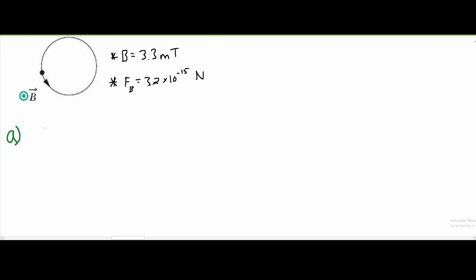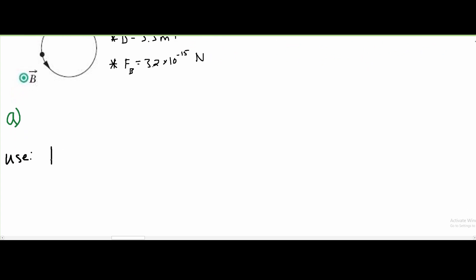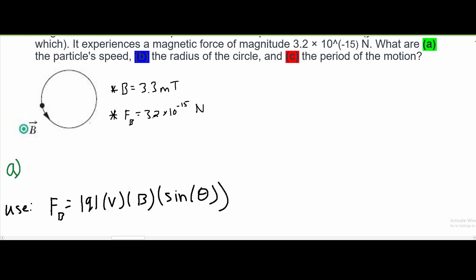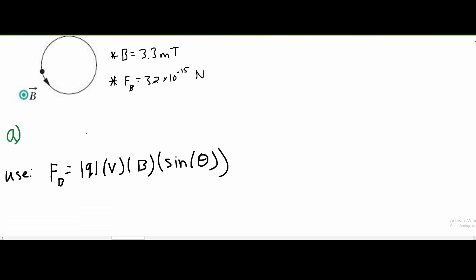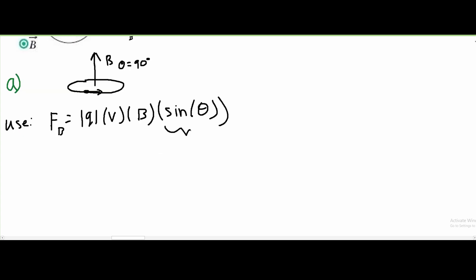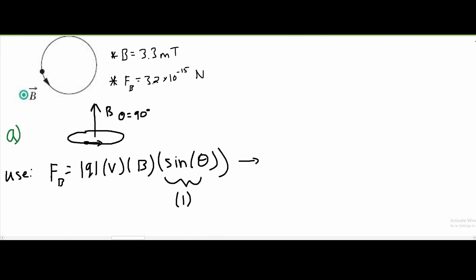For part A, we're asked what is the speed. To find the speed, we can use the formula: F_B equals charge times velocity times the magnetic field B, multiplied by sine of the angle. Here, our angle is just 90 degrees, since our B is going out of the page. Whenever there's a circle, it's as if it's going out of the page, so B points straight outward, meaning our angle is 90 degrees and sine of 90 is just 1.